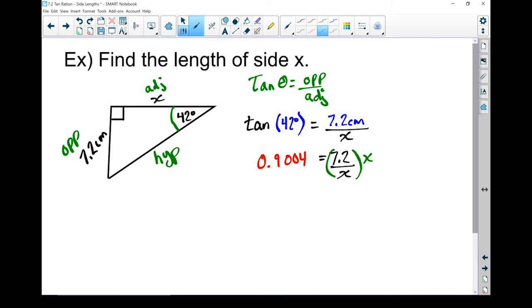x on the top, x on the bottom. Those two cancel each other out. So now I've got x times 0.9004 equals 7.2. My goal is still to get that x all by itself. So I'm going to divide both sides by 0.9004. Divide this by 0.9004. Now I'm going to solve.